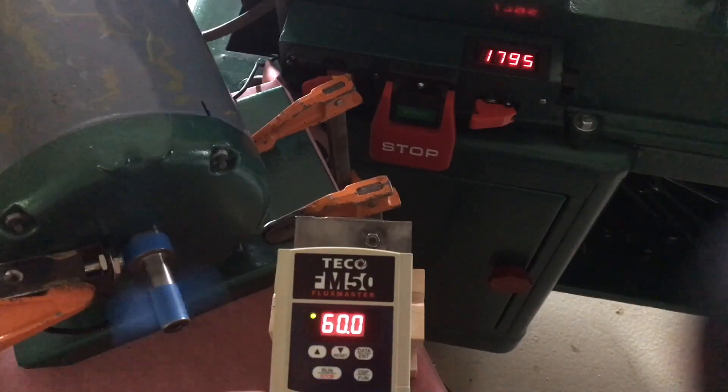The VFD still has all the factory settings except I have already set the maximum at 80 hertz. So at 60 hertz, it's putting out almost 1800 RPMs. You can also see that the acceleration time and the deacceleration time is a factory default of five seconds, which is pretty slow. We'll change that.